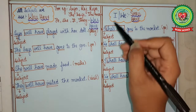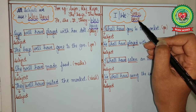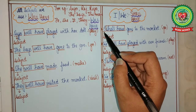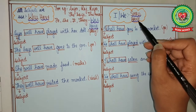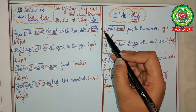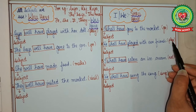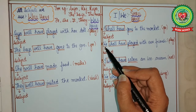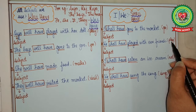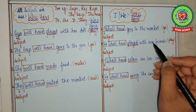Here is an exception: with 'I' and 'we,' we will always use 'shall have.' For example, 'I' (verb: go) — with I we use shall have, go changes to gone, so: I shall have gone to the market. 'We' (verb: play) — with we we use shall have, play changes to played, so: We shall have played with our friends.